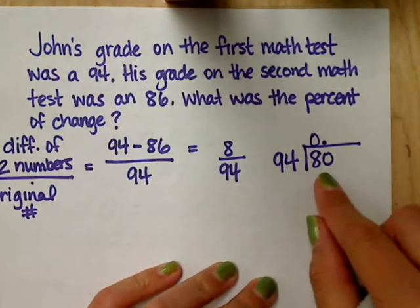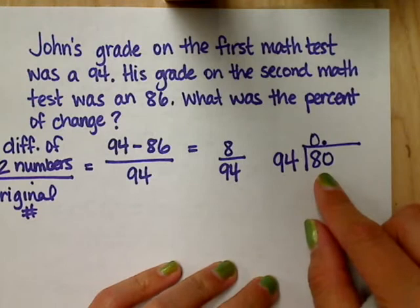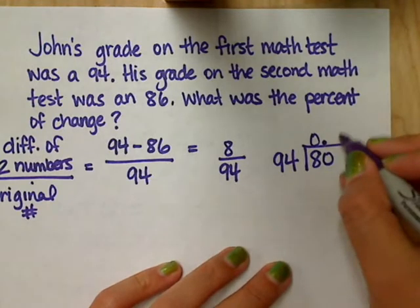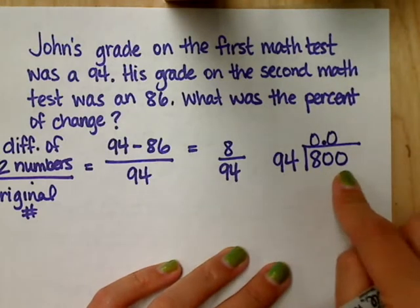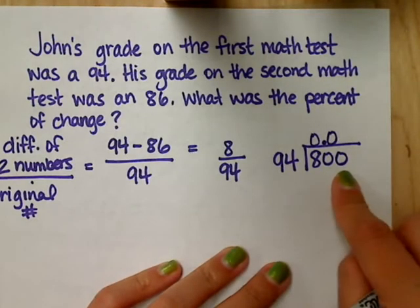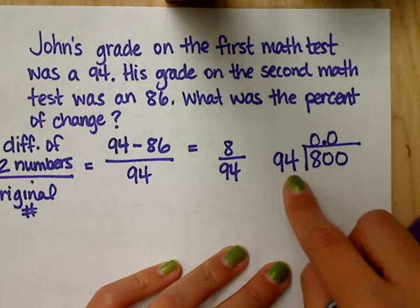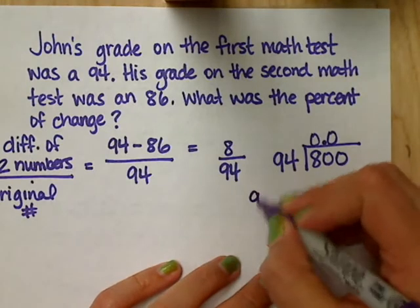94 into 80? Catherine, how many times? 94 into 80? Zero. Again. So I add another 0. 94 into 800? I told you this wasn't going to be pretty. But it cannot go in 10 times, because that would be 900. About 8? Okay, let's look. We'll pull to the side, and we'll work it out.